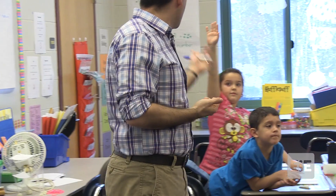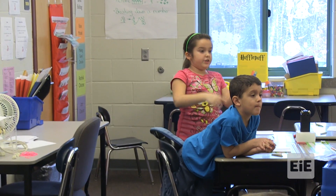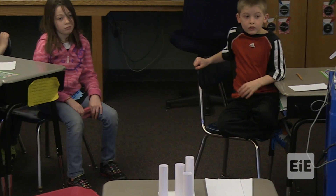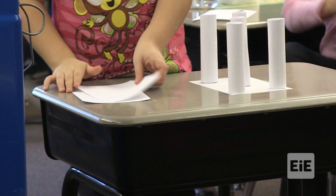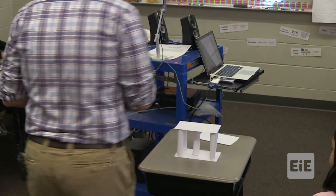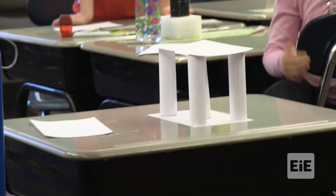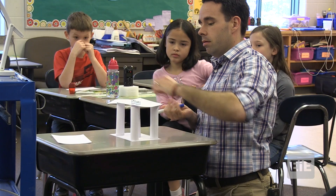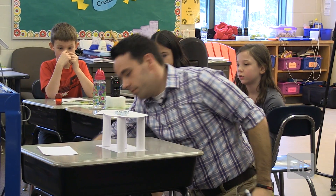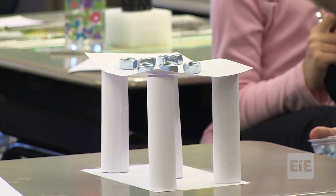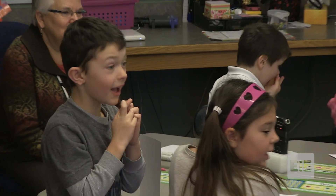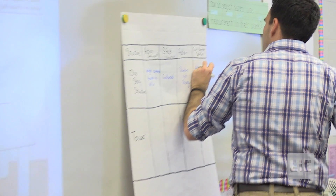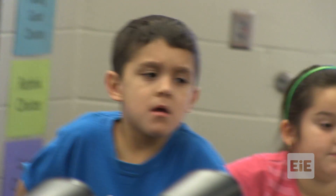What's our solution? We could fold another piece of paper, put the two poles where they were before, fold another piece of paper, and put it in the middle as an extra column. Let's test it. Did it support more than before? Yes! So being civil engineers, we need to keep looking at the problem, but I like your solution of adding a column to the center. Give yourselves a round of applause.